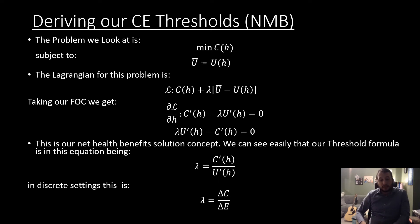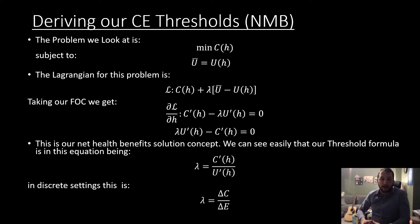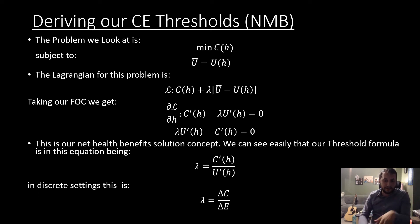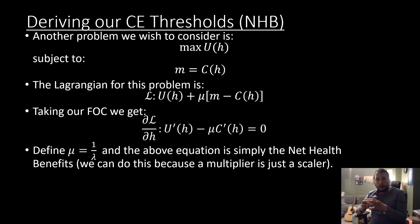In a discrete setting, which is what we see on the regular, this is just going to be the change in costs all over the change in effectiveness. I'm being a little lazy with my notation where I'm defining change in effectiveness as being the same as a change in utility. It just depends on what you want your constraint to be. So we see that this works very nicely in terms of deriving our net health benefits formula.